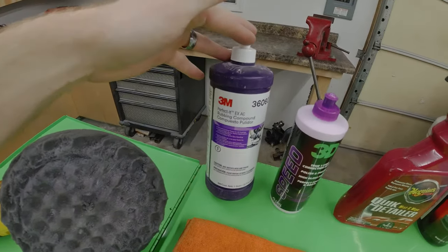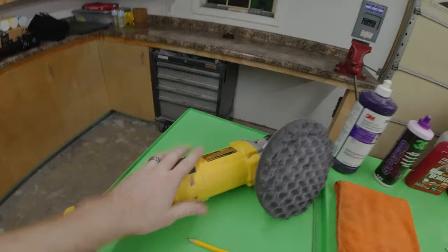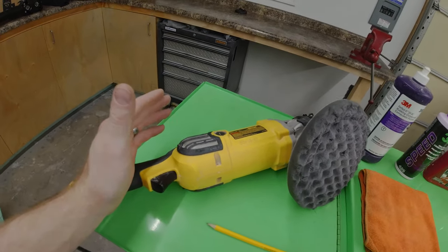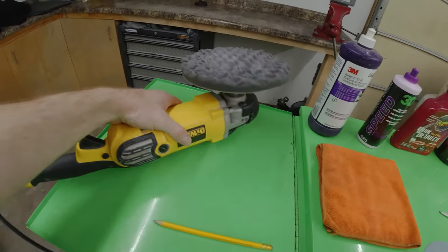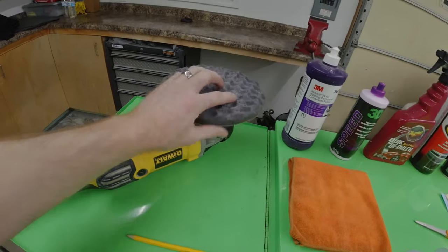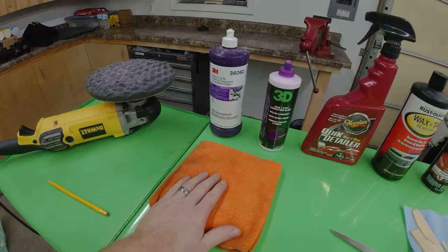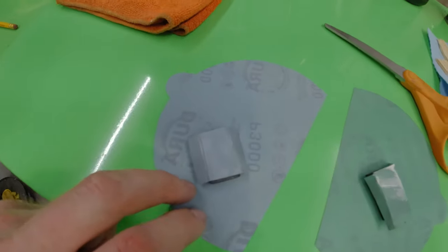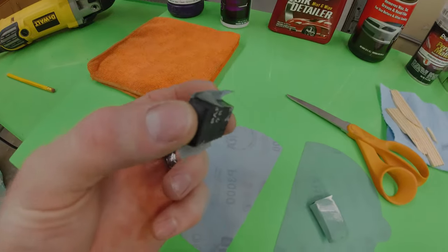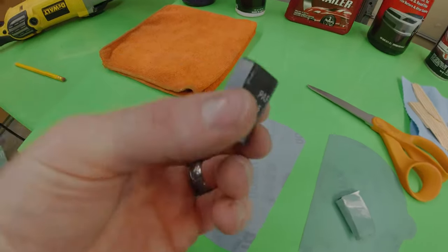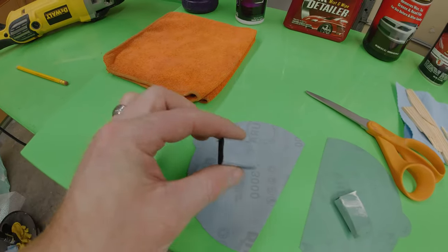Next you're gonna need some kind of rubbing compound and also some kind of polish. Then a buffer. You can do it by hand, it's just gonna take a lot longer, but this is my Dewalt single action buffer with a 3M perfecting pad on there. We've got a microfiber towel and 2,000 and 3,000 grit sandpaper. I've got a little sponge here that I cut and folded over.